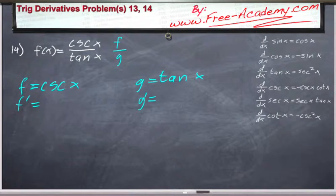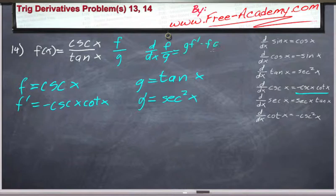All right, anyways, f is equal to cosecant of x. We need the derivative of cosecant of x, which is negative cosecant cotangent. And then g is equal to the tangent of x, which is, the derivative is secant squared of x.